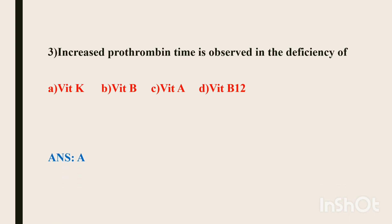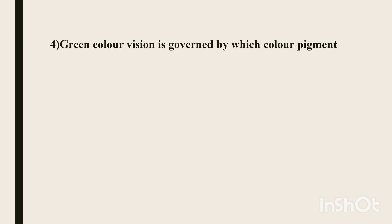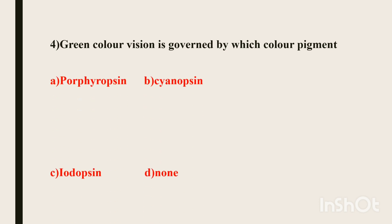Fourth question. Green color vision is governed by which color pigment? We can perceive all colors because of three basic colors: red, green, and blue. There are corresponding pigments in the eye: red color pigment, blue color pigment, and green color pigment. Options are: Option A: porphyropsin, Option B: cyanopsin, Option C: iodopsin, Option D: none of the above.